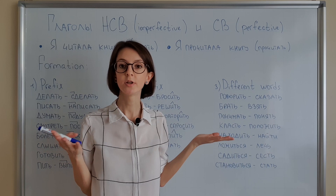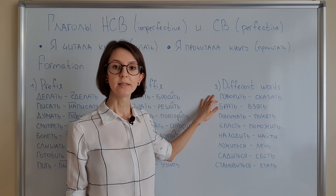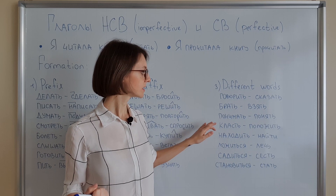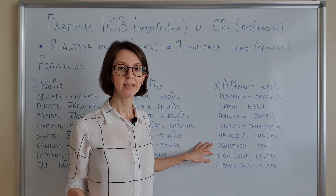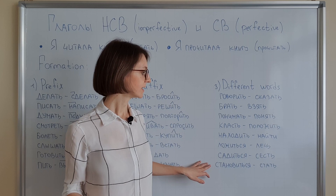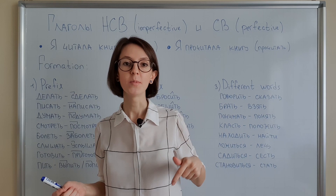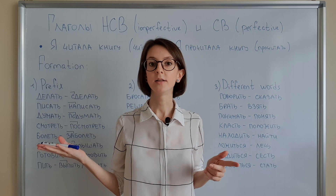Way number three: when the words are actually completely different — you cannot say they are paired forms of the same verb. For example: говорить → сказать (to speak/say), брать → взять (to take), понимать → понять (to understand), класть → положить (to put), находить → найти (to find), ложиться → лечь (to lie down), садиться → сесть (to sit down), становиться → стать (to become). This is just a small list. I will sometimes leave a table in the comments with more examples that you can learn by heart, unfortunately. Now let's talk about the differences in use of perfective and imperfective verbs.